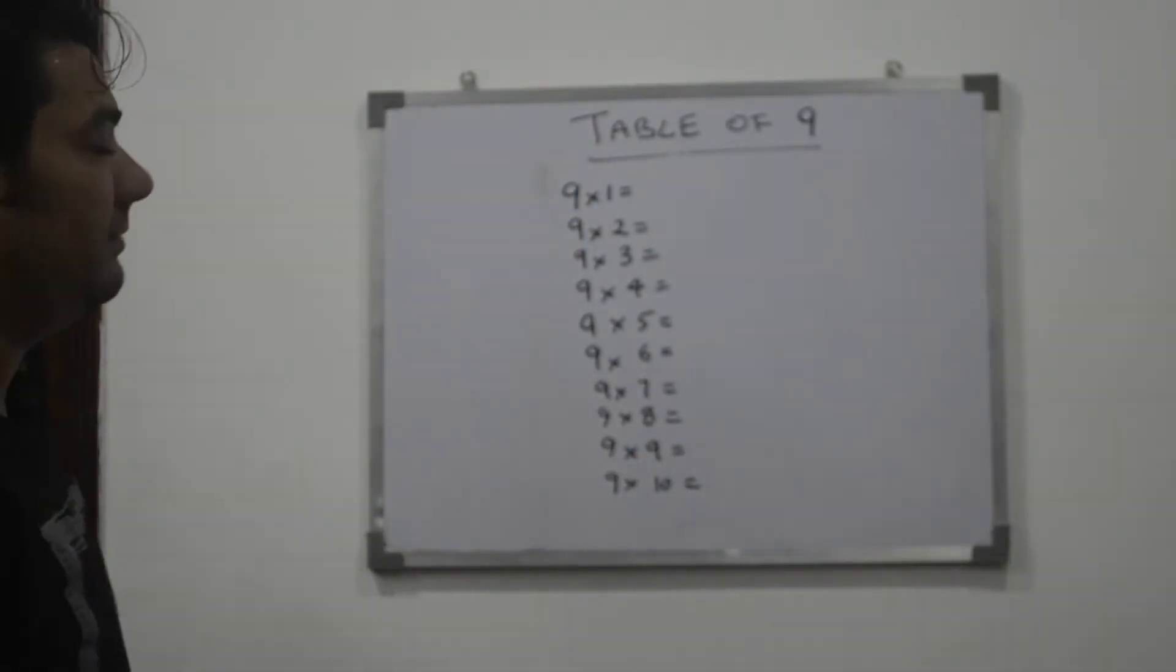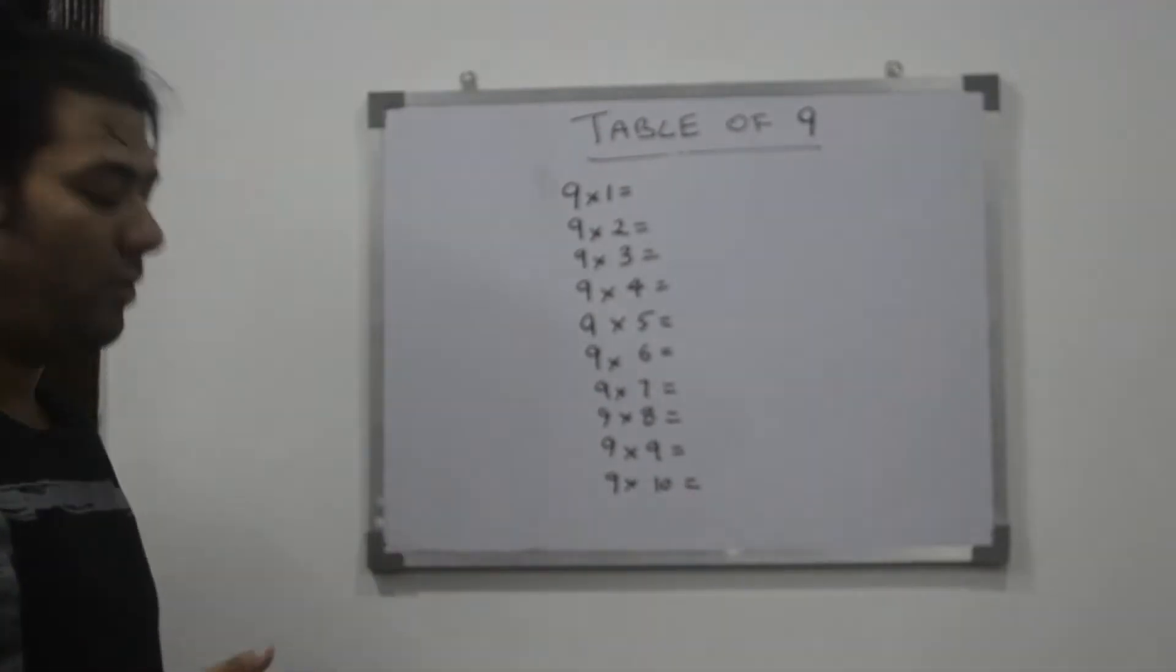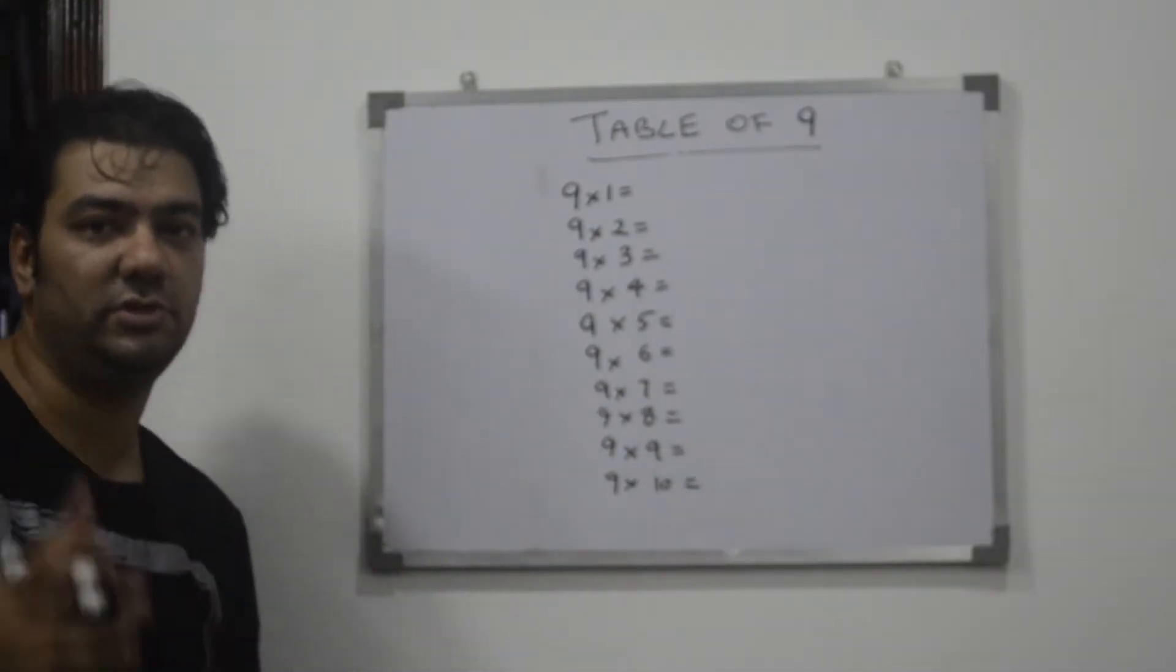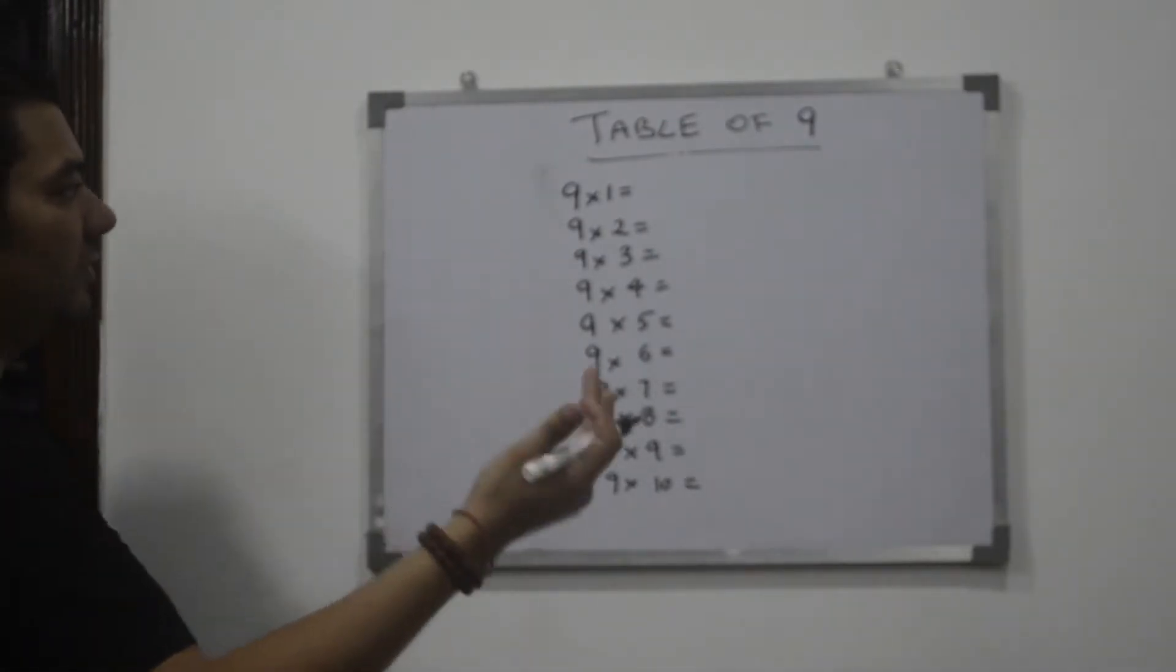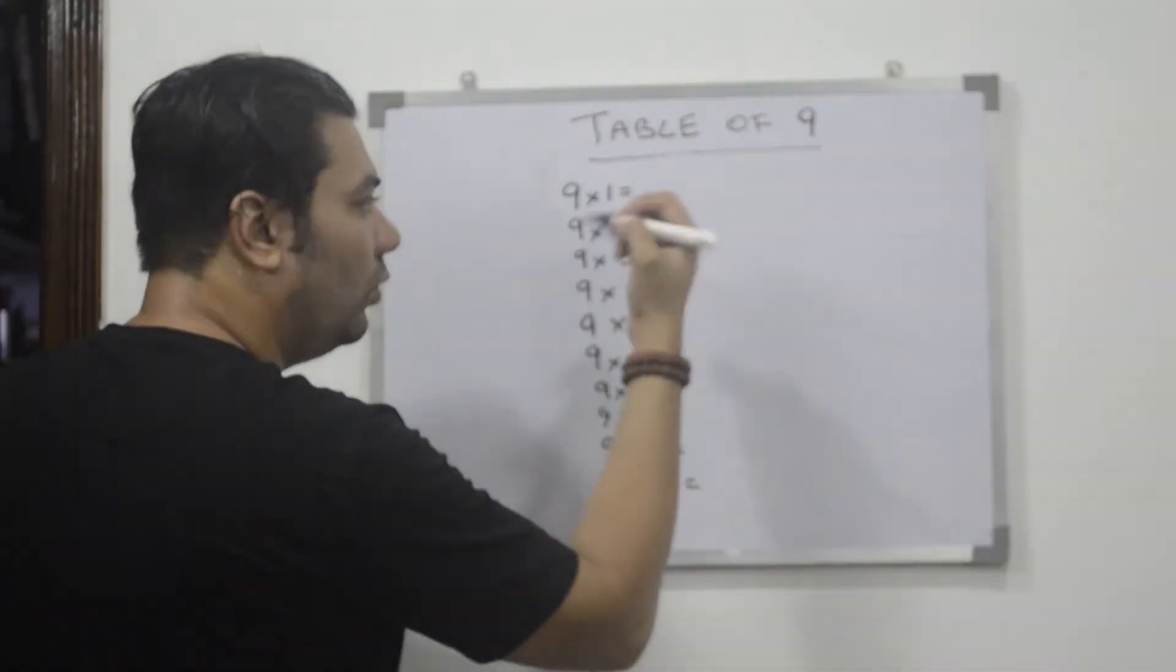So this is a blank table. It's very easy. It's the same formula like we're doing. We have to write the numbers.